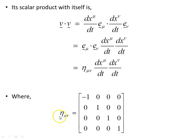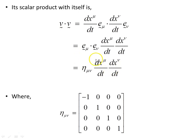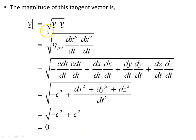ηᵘᵛ is given by a 4×4 matrix with −1 in the (0,0) position and 1s along the remaining diagonal — this is the metric of flat Minkowski spacetime. So the scalar product of the tangent vector with itself is this object. The magnitude of the tangent vector, |v|, is the square root of v·v. If we expand it out, noting there are only diagonal terms, we get this expression.